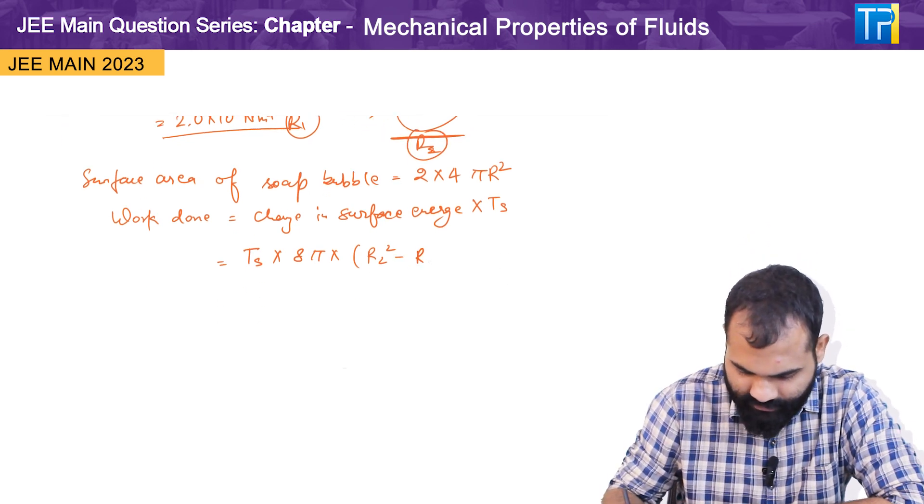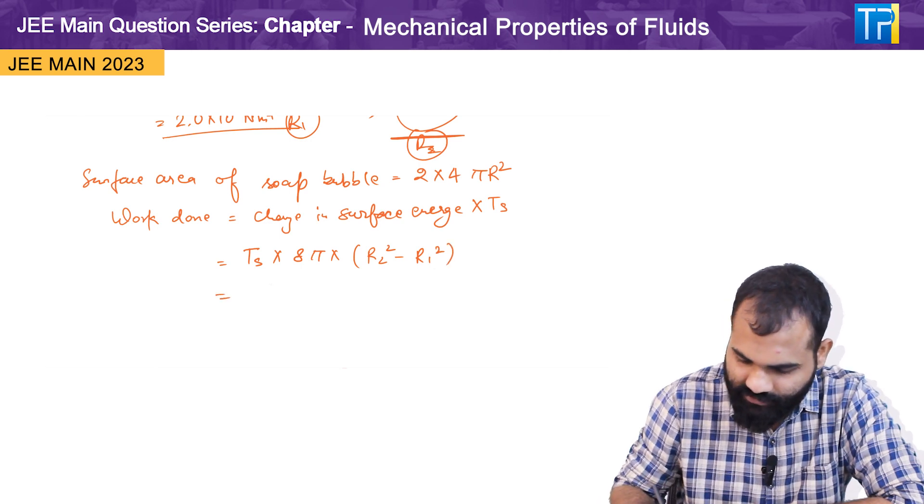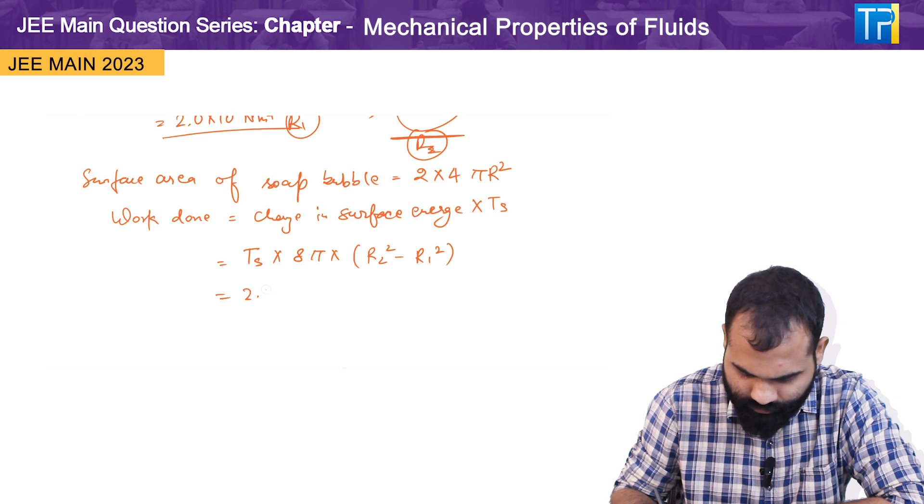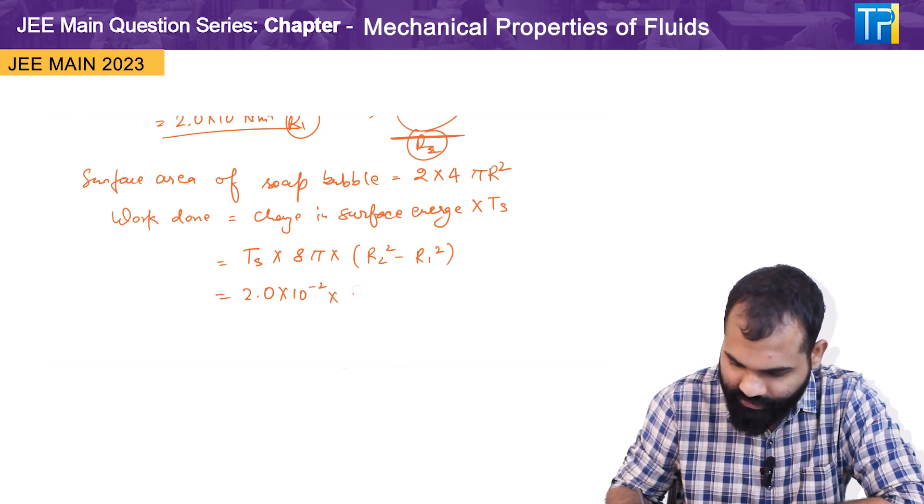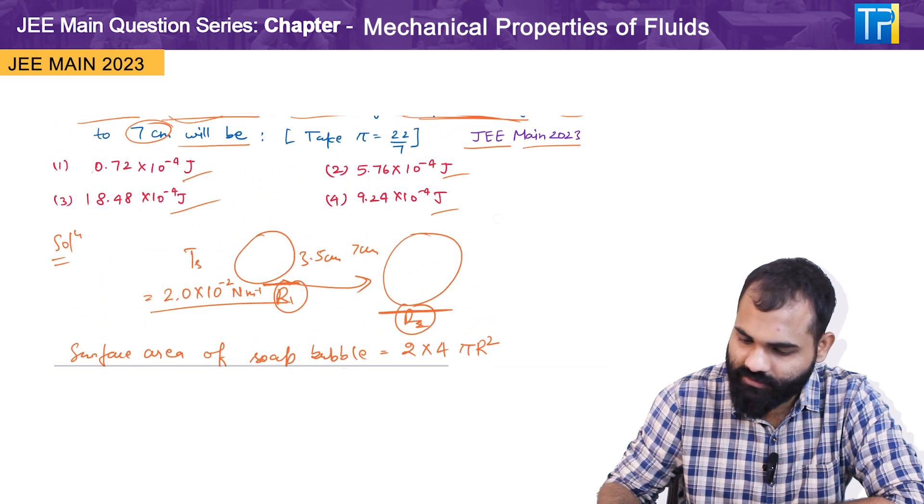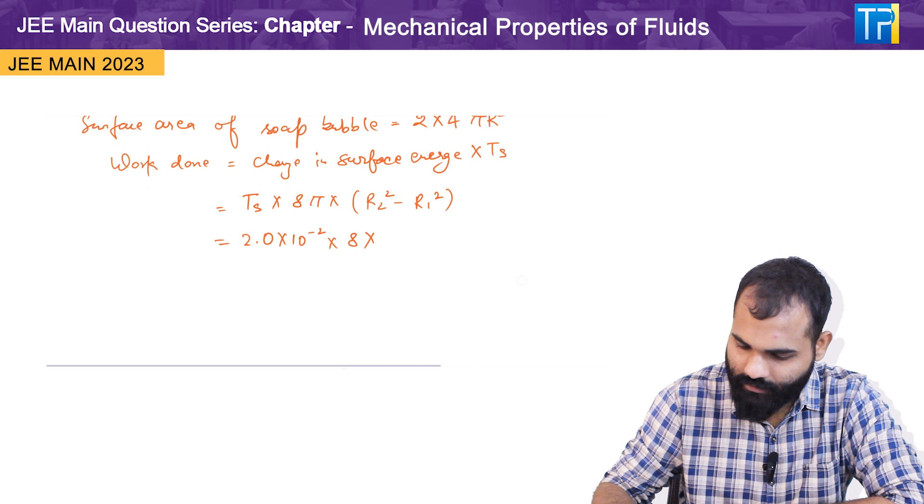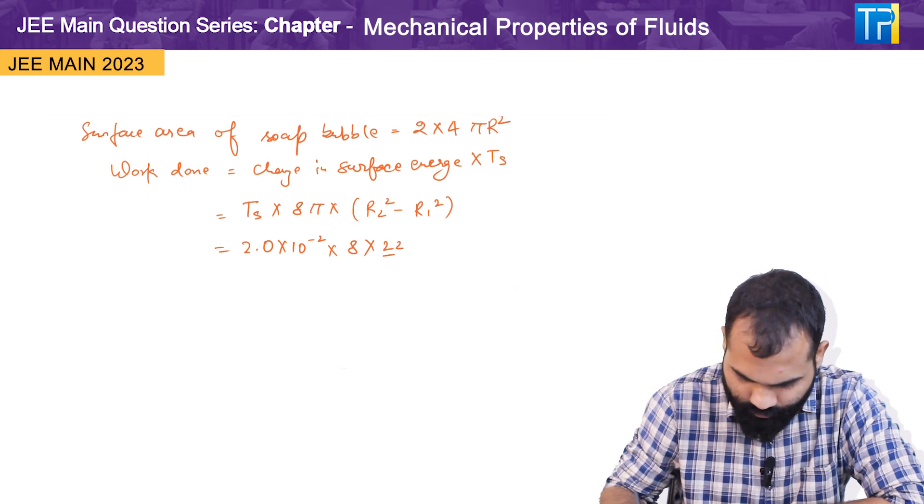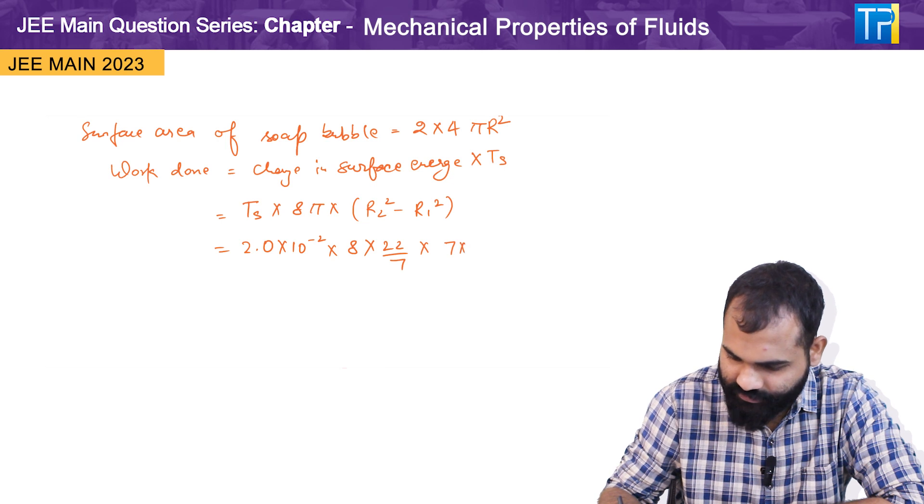So r2 square minus r1 square. The value of T is given here which is 2.0 into 10 raised to power minus 2, into 8, the value of pi is 22 by 7 which is already given in the question. The value of r2 is 7 into 7, so 7 square.